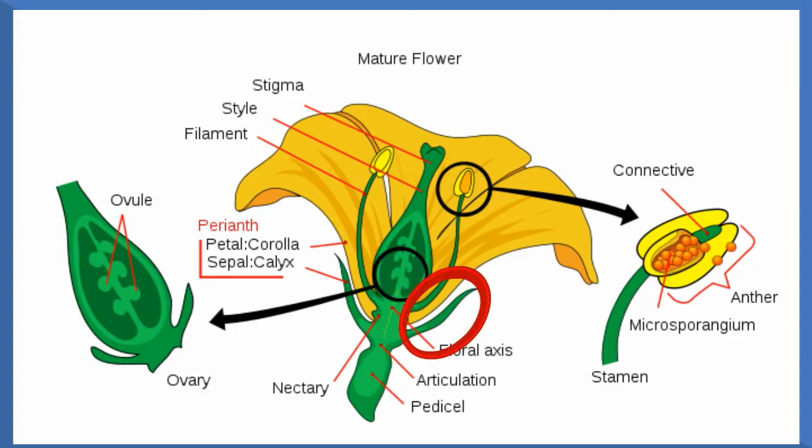Next is the sepal. These are the small leaf-like parts that grow at the base of the petals.